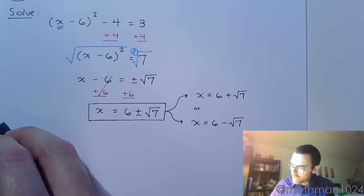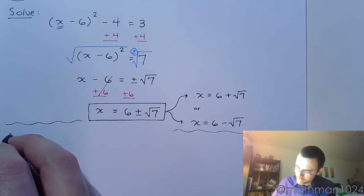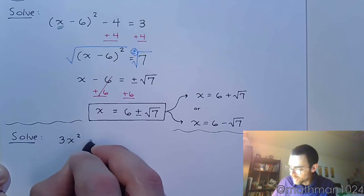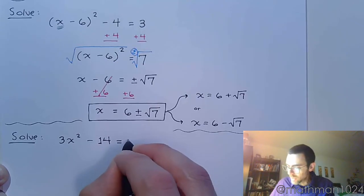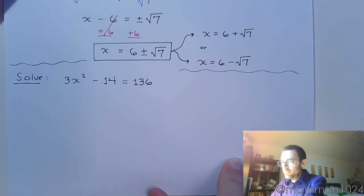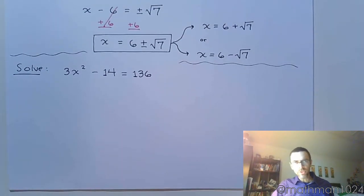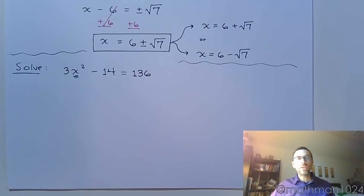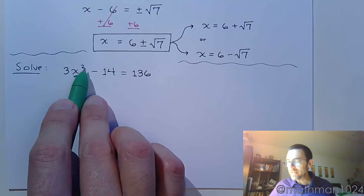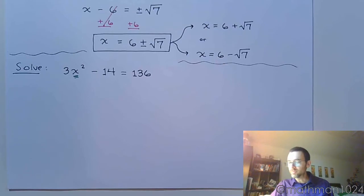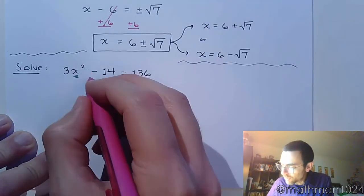Let's try one more equation. Solve 3x² − 14 = 136. This is the only place where the variable appears, and it is a square. Pay attention to the fact that the square is only on the x — the square does not affect the 3. To use the square root property, we have to get the square by itself, so we peel away the layers and solve for x squared first — add 14 to both sides.